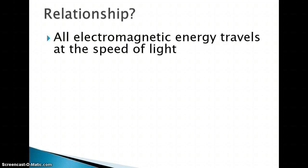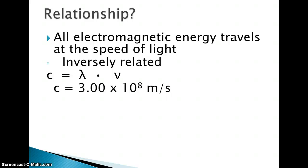All electromagnetic energy travels at the speed of light, like we talked about earlier. They're inversely related. So C is our constant that stands for the speed of light, which is equal to wavelength times frequency. That C constant, like I mentioned earlier, is 3 times 10 to the 8th meters per second. That's going to be a number that you're going to need to know.